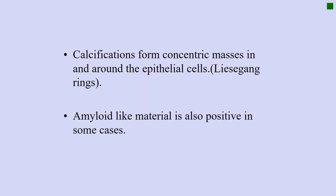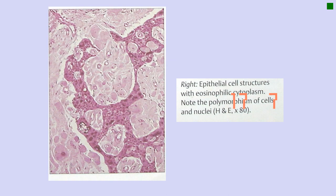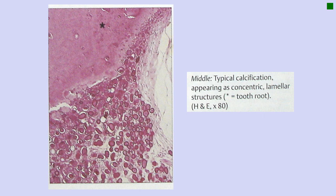Another feature noted in CEOT, as the name suggests, is calcifications in the form of concentric masses seen around epithelial cells. This is typically described as Liesegang rings, which is characteristic of CEOT. Amyloid material is also positive in some cases. Here you can appreciate the pleomorphism in cells with eosinophilic cytoplasm, and the pale eosinophilic material in the stroma may be amyloid-positive when stained with special stains.